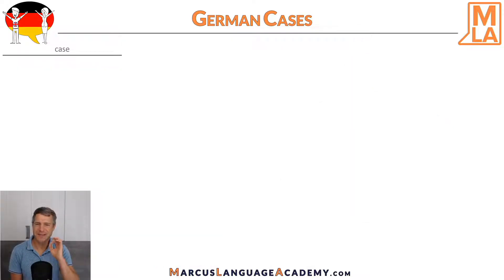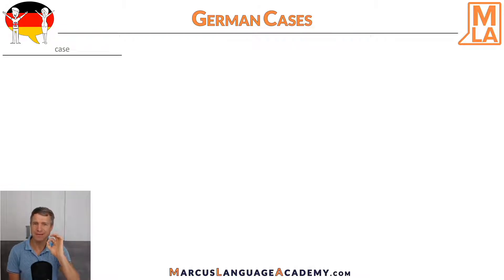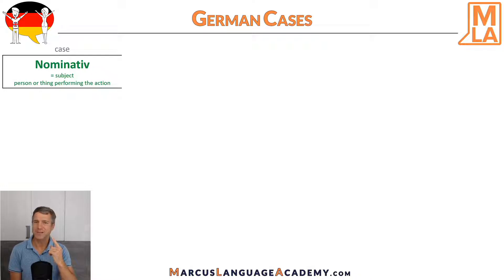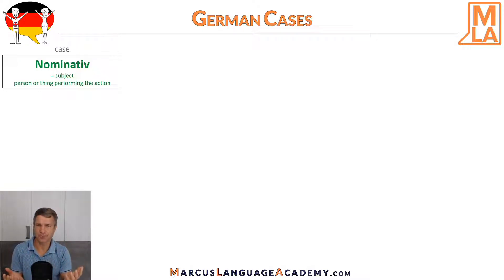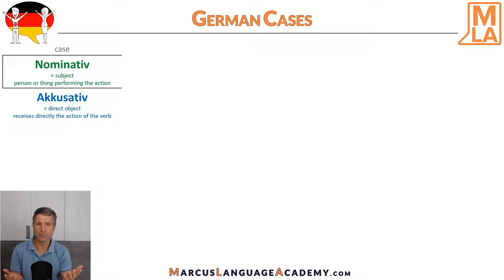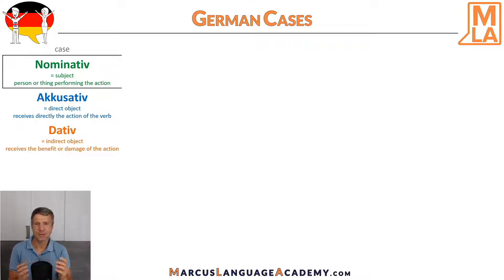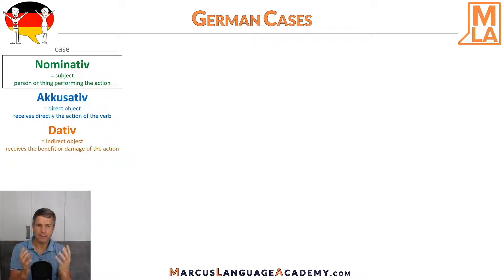In German we have several cases that may or may not change our articles. The three most important cases are: Nominativ, used for the subject and shown in green — that is the person or thing that performs the action. Akkusativ is our direct object and in blue it directly receives the action of the verb. Dativ is our indirect object and in orange it receives the benefit or damage of the action.